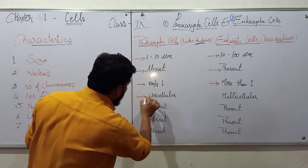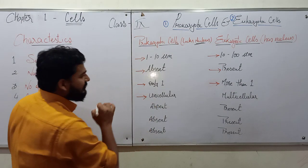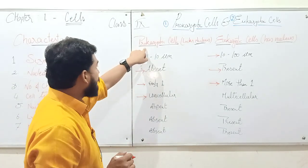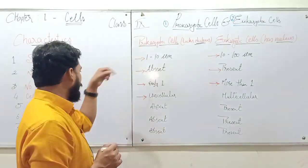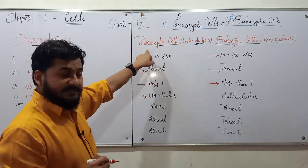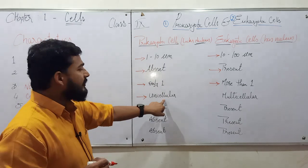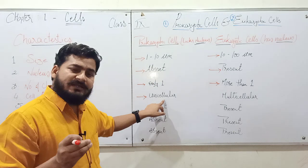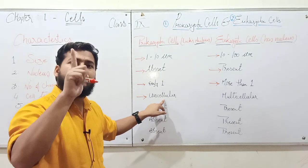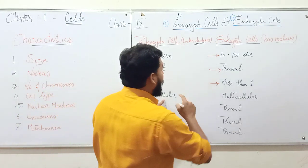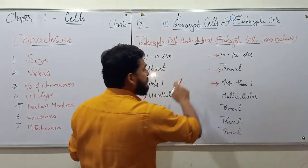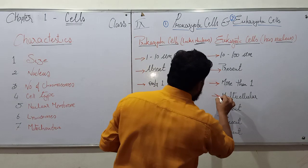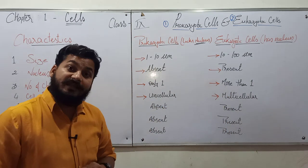Then we talk about cell type, or the organization of the organism. Prokaryotic cells are generally unicellular in nature, meaning the organism itself consists of only one cell. The organisms which carry eukaryotic cells are generally multicellular in nature.